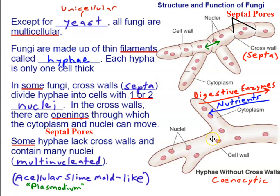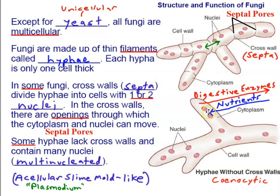In coenocytic fungi that don't have septa, cell walls still surround the outside of the hyphae, supporting them. For multicellular fungi, the hyphae are growing into whatever they are growing on — say, a piece of bread. The hyphae of the bread mold grow into the bread, secreting digestive enzymes outside the cells. Those enzymes digest the bread and nutrients are absorbed back into the cells, traveling throughout the entire fungus through the hollow filaments of the hyphae. That's what makes them absorptive heterotrophs.